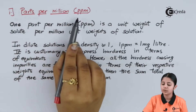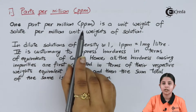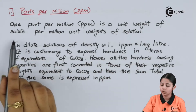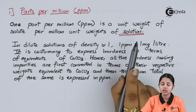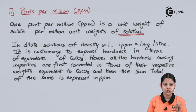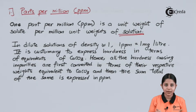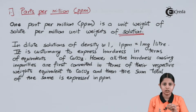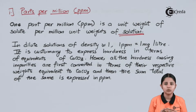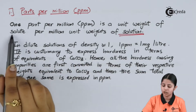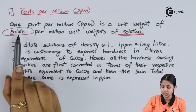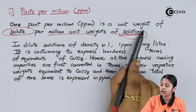Parts per million, also known as PPM: one part per million is a unit weight of solute per million unit weights of solution. A solution consists of two things — solute and solvent. The solvent here is water, and the solute is all the hardness-causing reagents mixed into it. So when talking about PPM, it is the unit weight of hardness-causing reagents per million units of the entire solution.